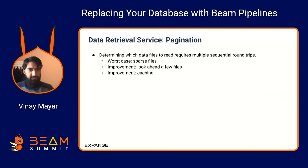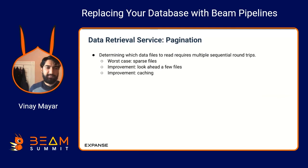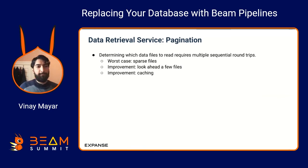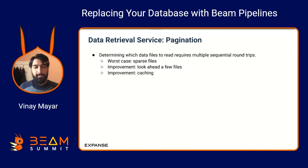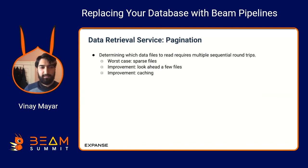One big problem is that we need a lot of sequential round trips to the object store, especially bad with sparse files — we might have to read hundreds of files to serve a single request. Fortunately, the shape of our data means we don't have many cases of very sparse files. When we do, a few improvements help: we can look ahead and read multiple data file manifests in parallel instead of sequentially, and we can implement caching for commonly requested manifests, which are small files and very cheap to cache in the data retrieval service.